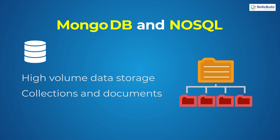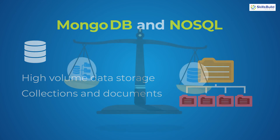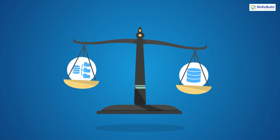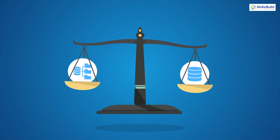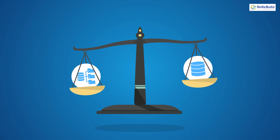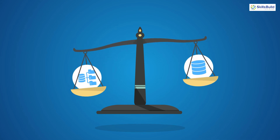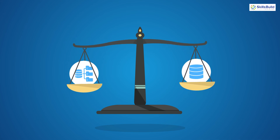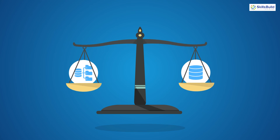Each collection can have multiple documents and each document can have a varying number of fields, meaning we don't have to follow any schema. So which database is best to use? There is no clear winner because the choice of database is completely dependent on the type of application being built and the kind of data being stored. As the size of the application grows, we may need to use both relational and non-relational databases.